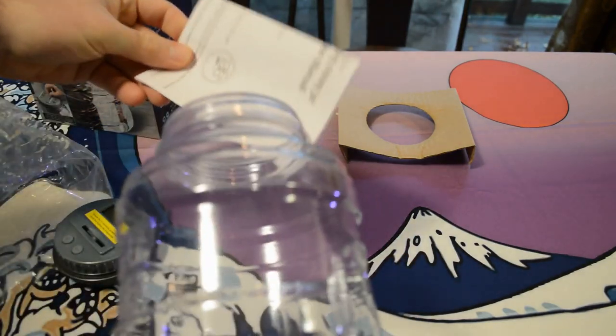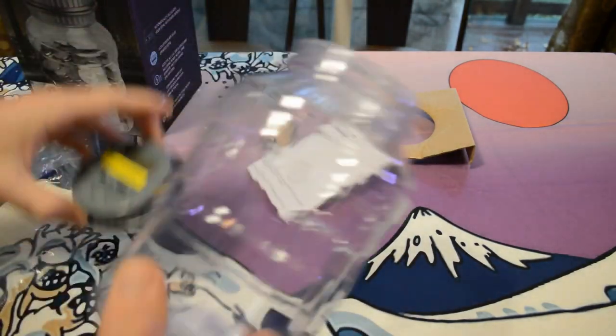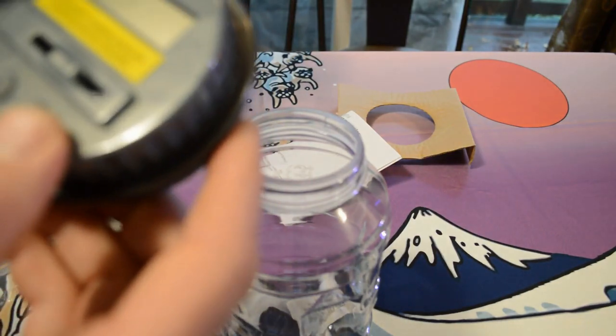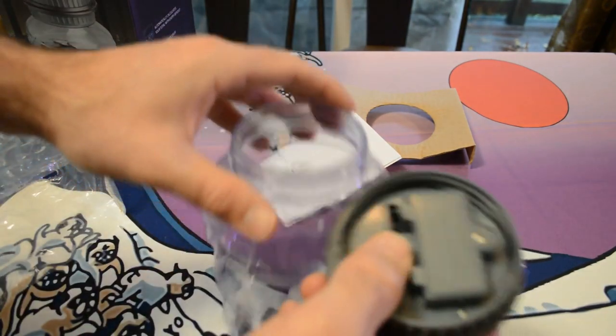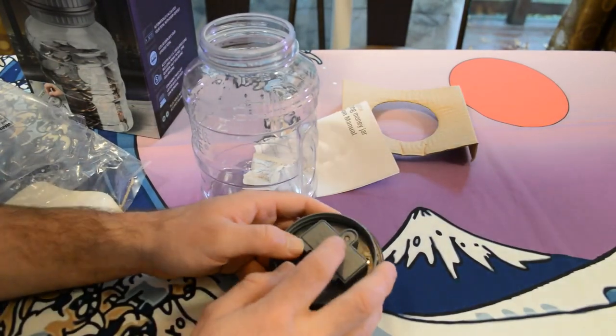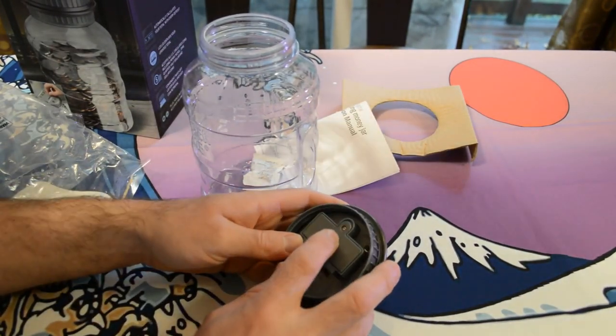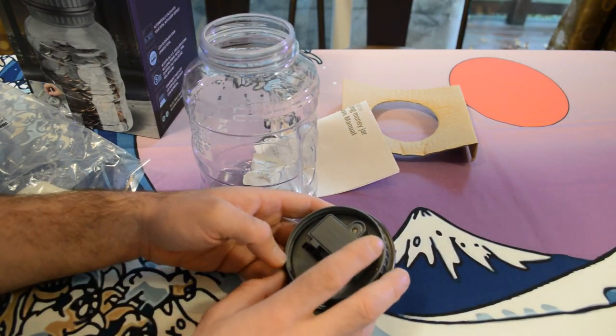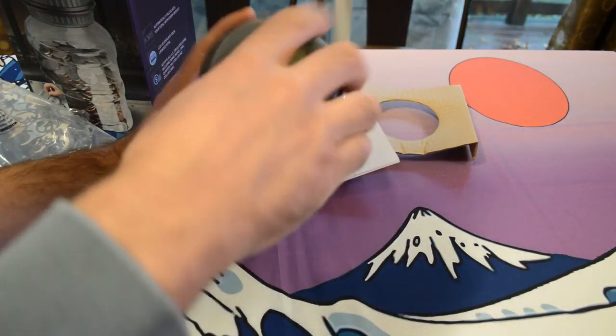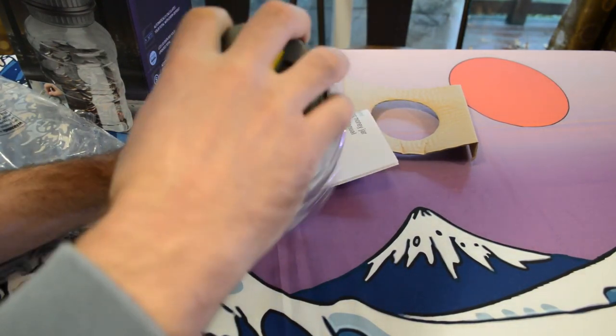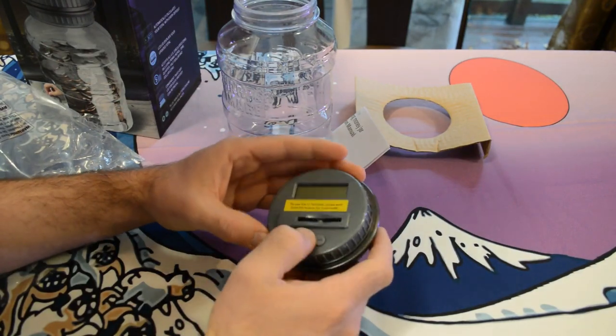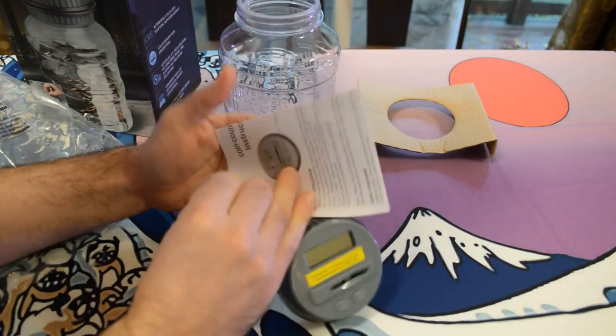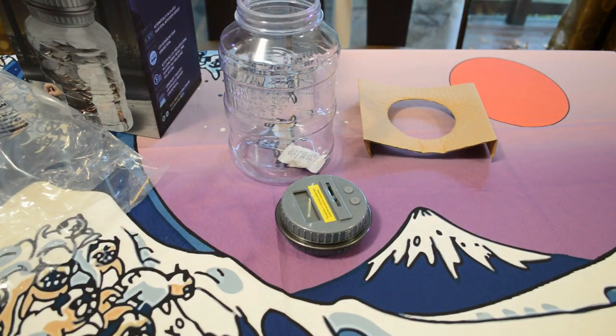It has one of these annoying battery covers—you have to use a screwdriver to take off the battery cover. I've noticed a lot of these inexpensive, kind of poorly made items, they don't have a snap. You have to take off the battery with a screwdriver, which is always annoying to me. Maybe not to you, but I do a lot of these reviews, so that's something I've noticed. It just takes a little bit of extra time.